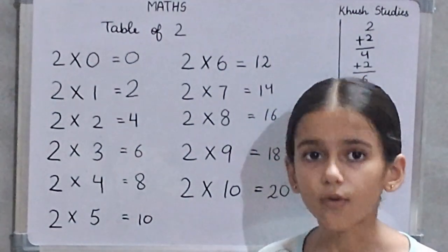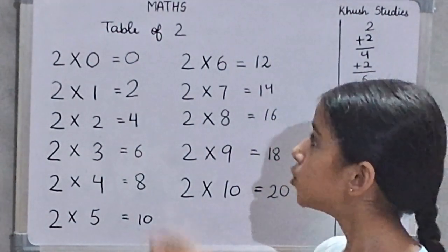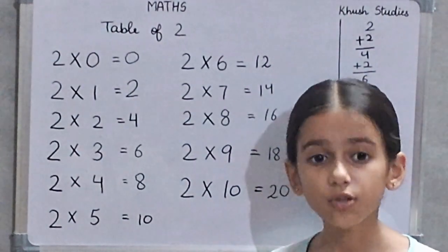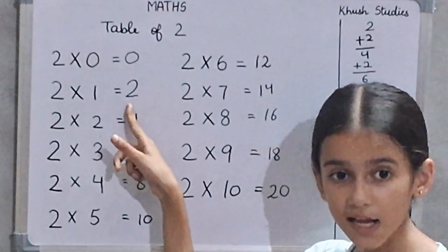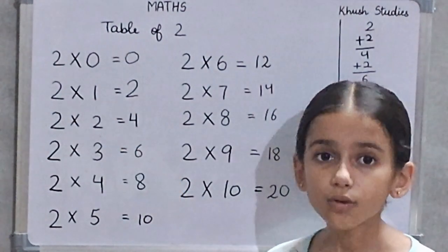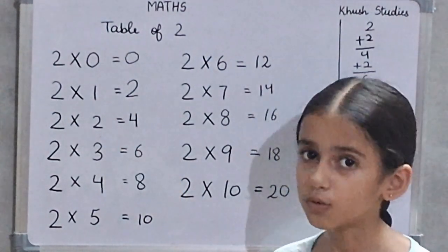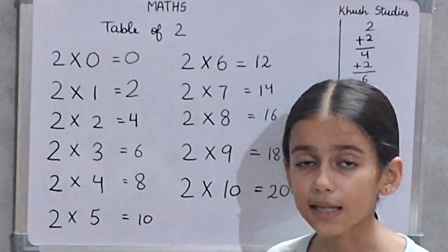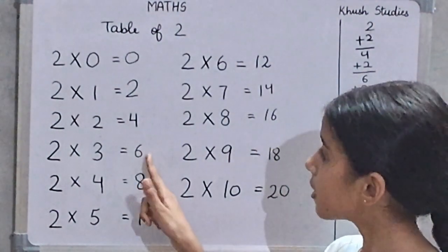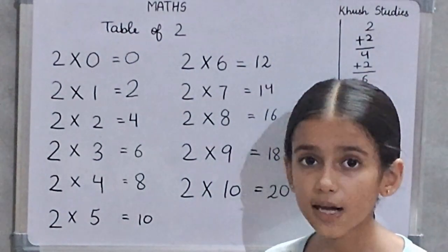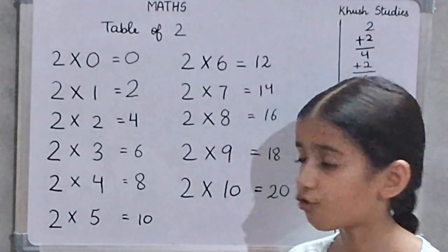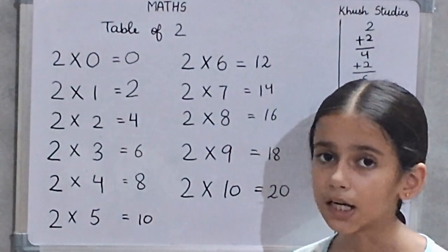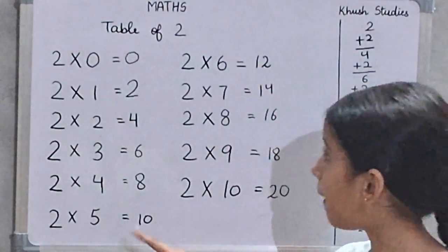2 times 0 are 0. 2 times 1 are 2. 2 times 2 are 4. 2 times 3 are 6. 2 times 4 are 8. 2 times 5 are 10.